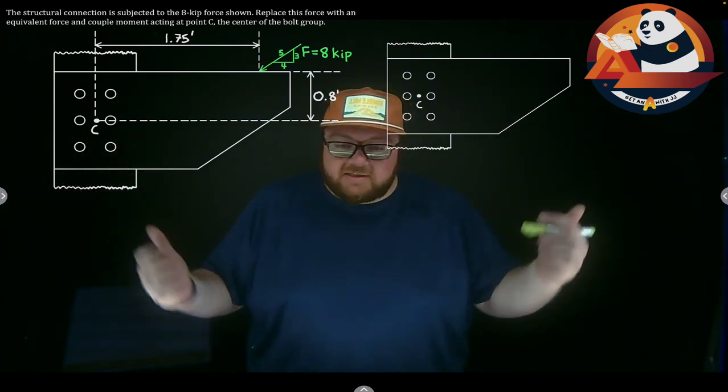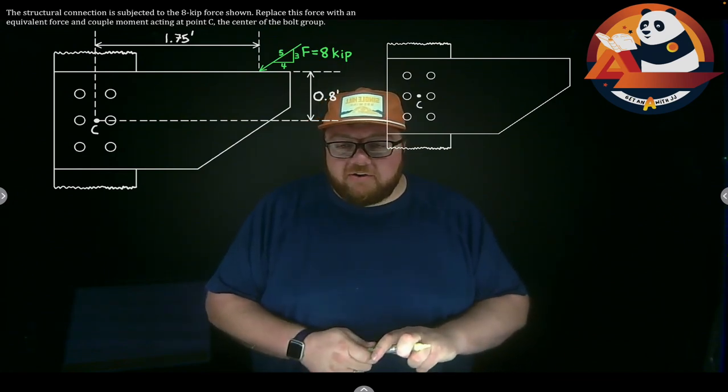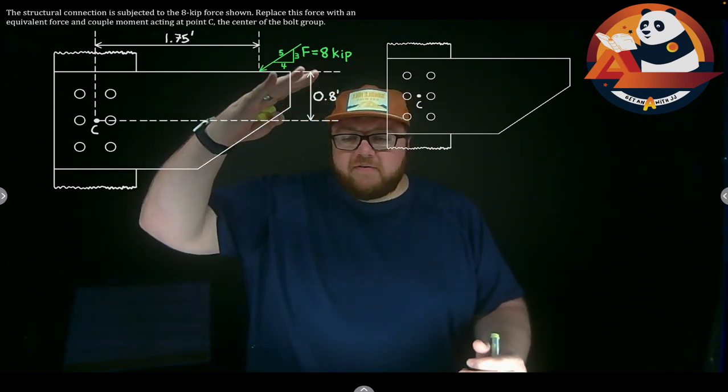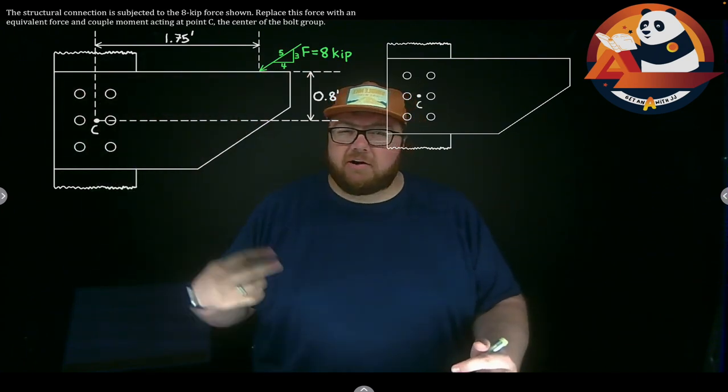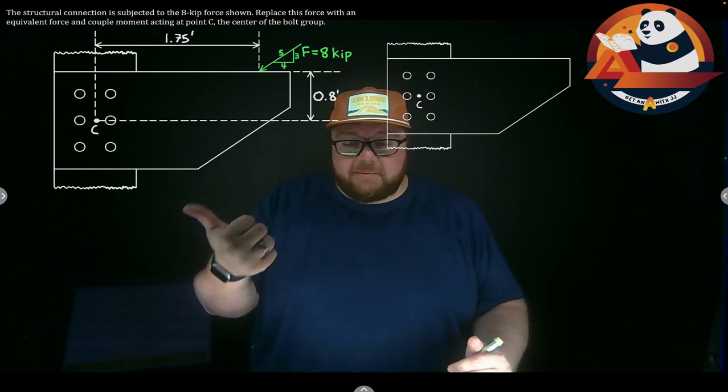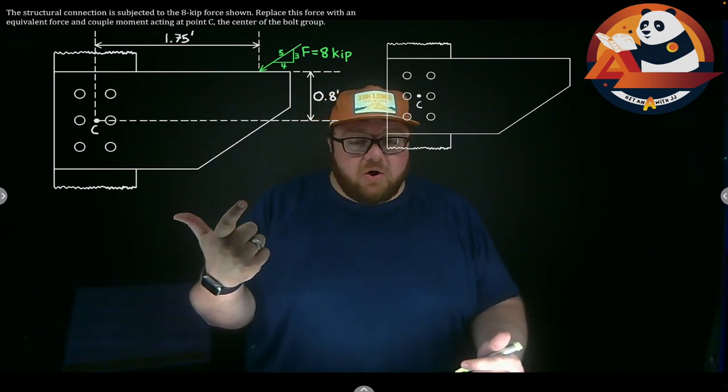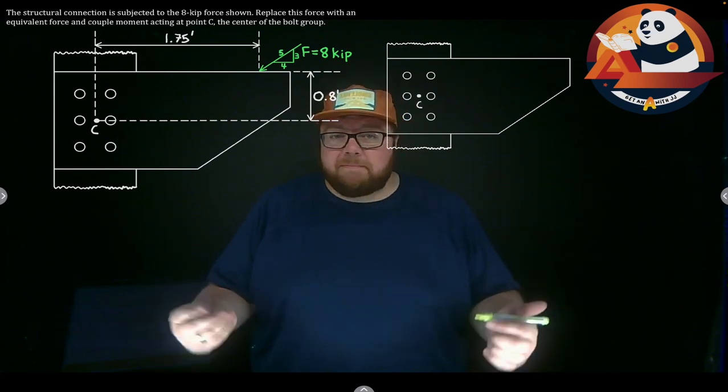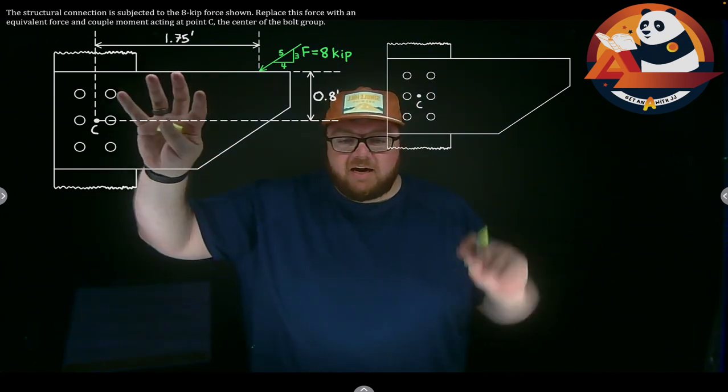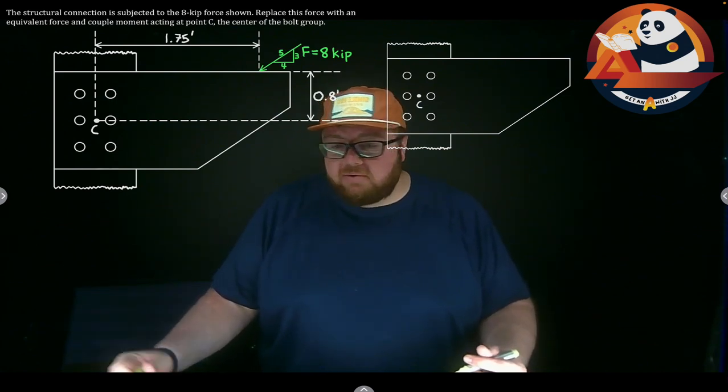Eight thousand pounds is acting here. If we're trying to get our equivalent force and couple moment, we're moving that to a new line of action. Our new system needs to have the same tendency to translate, so the sum of the forces should be the same, and tendency to rotate. The sum of our moments about any point has to be the same in our two pictures.